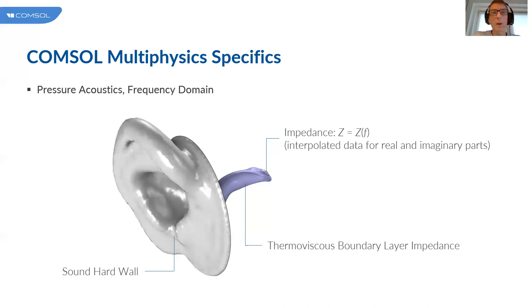Just a few COMSOL specifics if there are any COMSOL users listening in. The model is using the pressure acoustics frequency domain physics interface, so we solve the Helmholtz equation. A few words on the boundary conditions. Here there's a sketch of the geometry including the pinna. For the pinna we are using a sound hard wall boundary condition, so it's perfectly sound reflecting. At the location of the eardrum we are applying an impedance, a complex valued frequency dependent impedance taken from interpolation data available in the model.